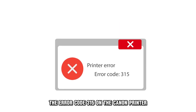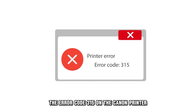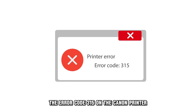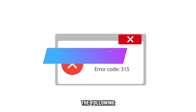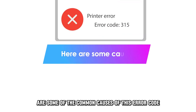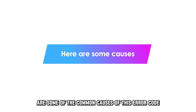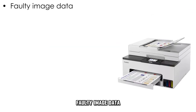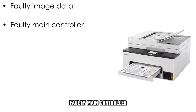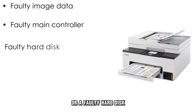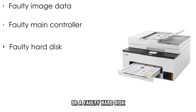The error code 315 on the Canon printer means that there's a fault with the image data. The following are some of the common causes of this error code: faulty image data, faulty main controller, or a faulty hard disk.